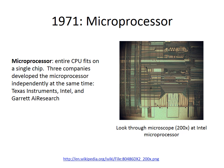In 1971, the brains of the computer — the entire CPU — were shrunk onto a single chip. This makes for a significantly smaller and less expensive computer, and the personal computer is now in sight.